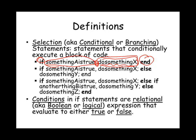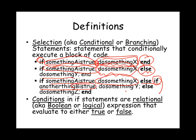Another usage of the if statement is to have it follow an else statement. In this case, if something A is true, then the first block of code will be executed. Otherwise, something Y will be executed. In the last example, we can chain several conditions using if and else-if statements. So if something A is true, do something X; otherwise if something B is true, do something Y; and if neither of those are true, do something Z.